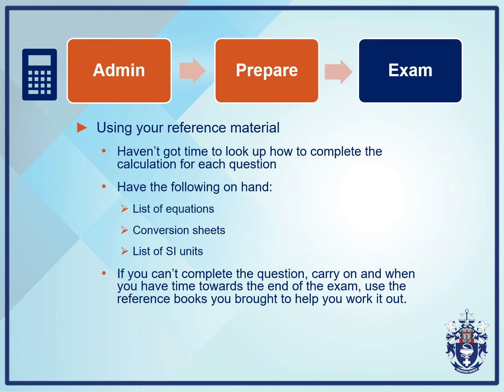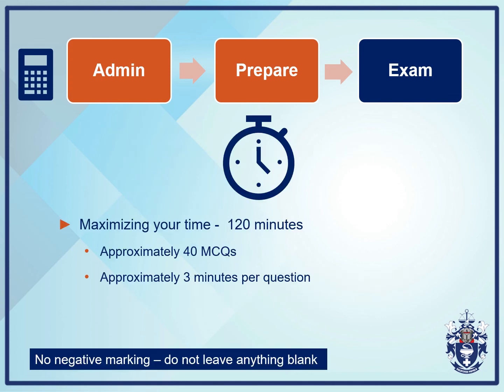What reference material are you going to take into the examination to help you tackle the calculation questions? Remember that taking a textbook into the examination may not be of any help, as you have very little time. We suggest that you have the following on hand: a list of equations, conversion sheets, and a list of SI units. If you can't complete a question, carry on, and if you have enough time at the end of the examination, go back and check it using one of the reference books you have brought with you. Remember to maximize the time you have — in the exam you have 120 minutes to complete approximately 40 multiple choice questions, which is 3 minutes per question. Bear in mind there is no negative marking, so do not leave anything blank — at least take a guess.